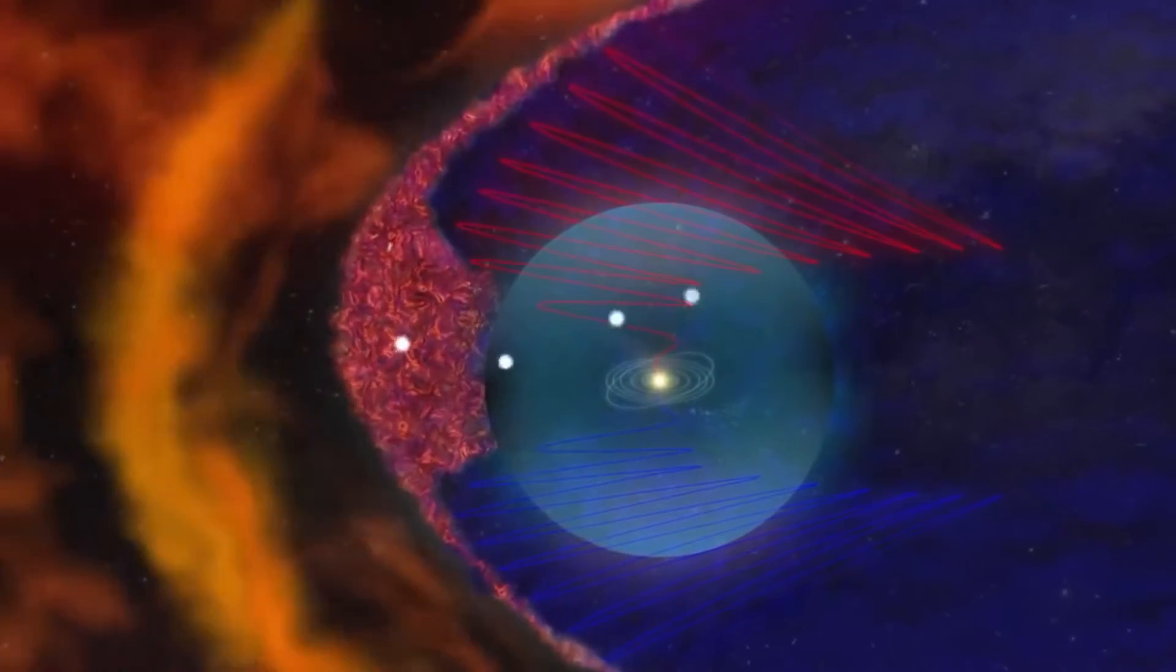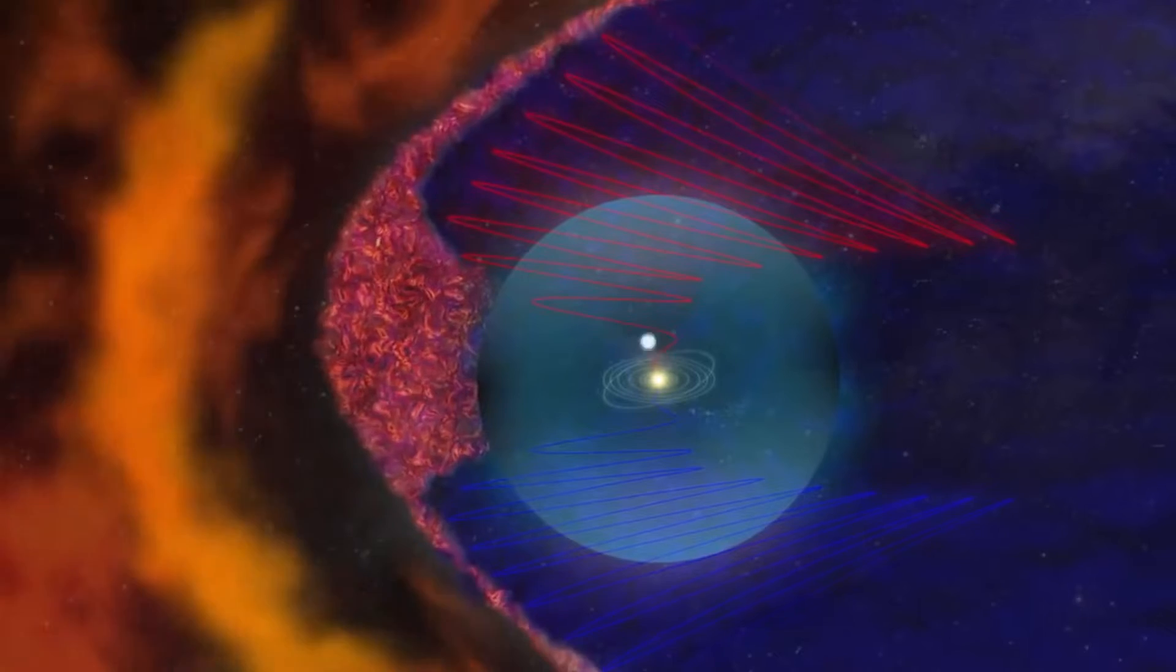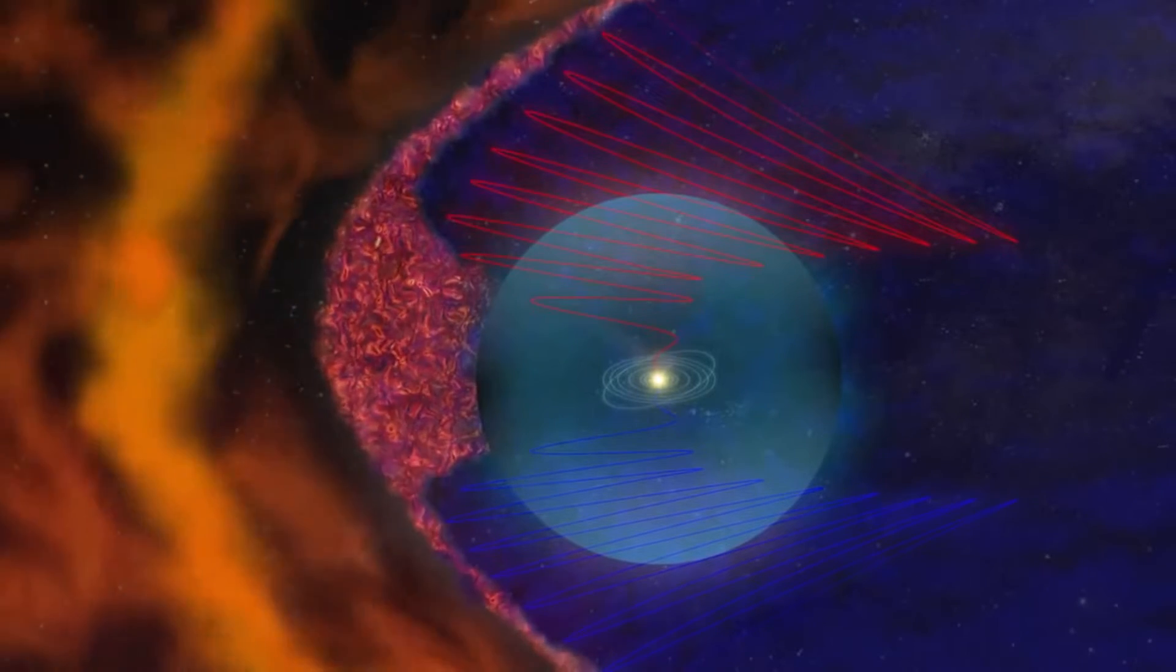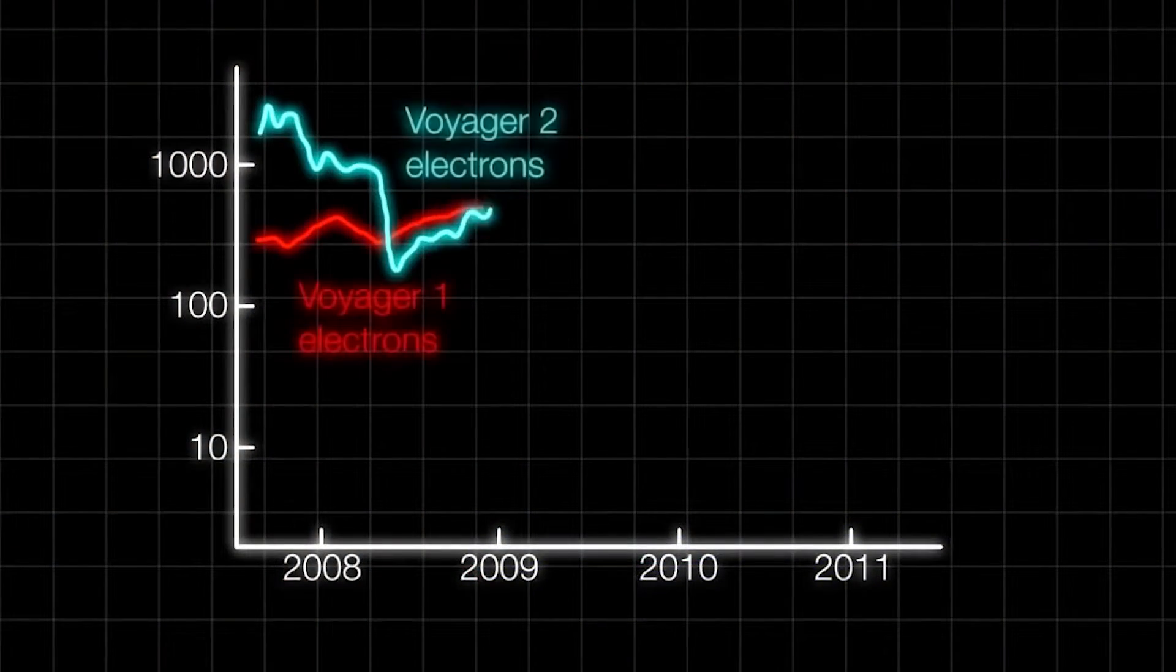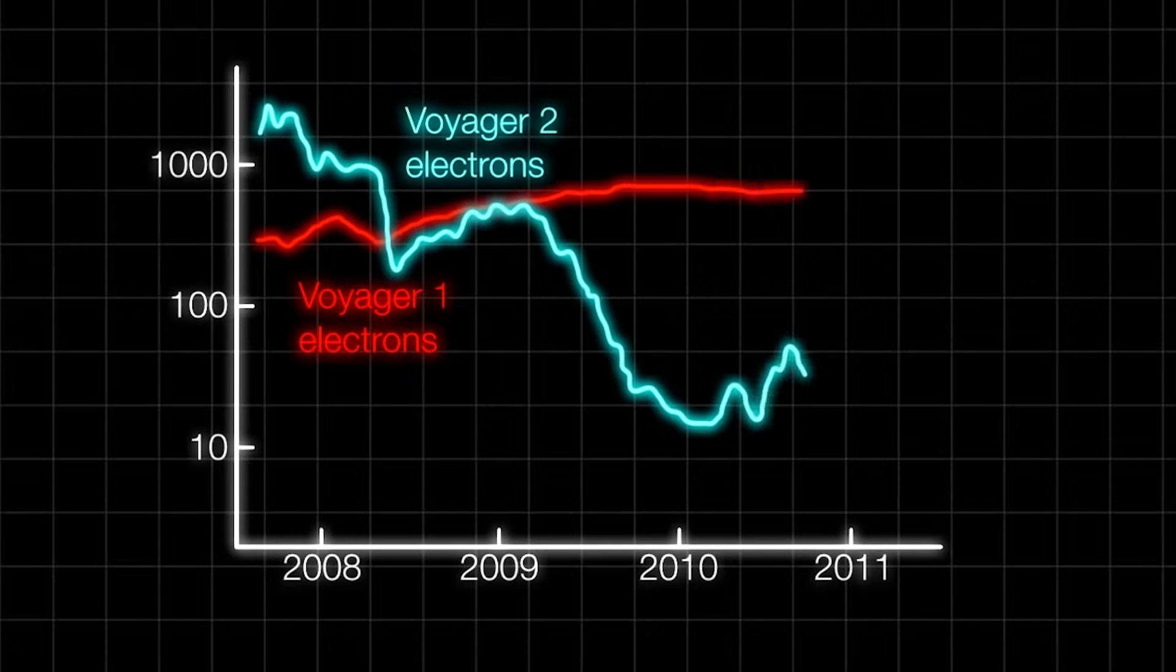Simply put, this border is always shifting due to interaction between the solar winds and the interstellar medium. However, new heliopause research has shown discrepant evidence to the established theory.